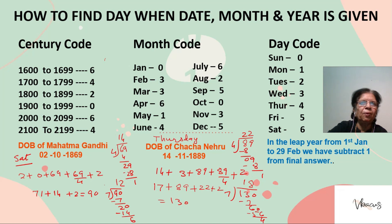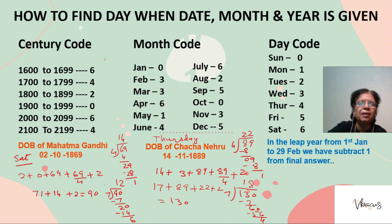The month codes are: January 0, February 3, March 3, April 6, May 1, June 4, July 6, August 2, September 5, October 0, November 3, December 5. We can also learn these the same way as a telephone number: 0-3-3-6-1-4-6-2-5-0-3-5.